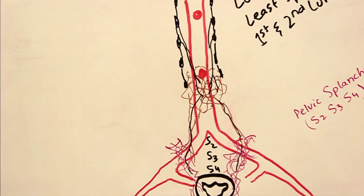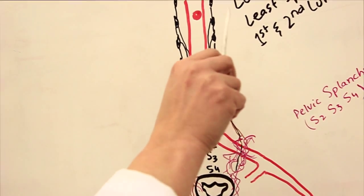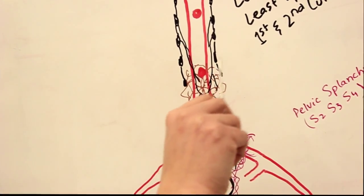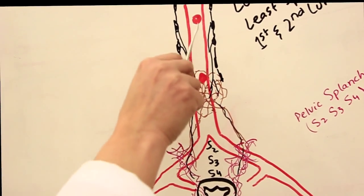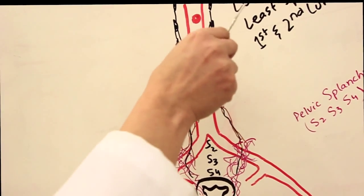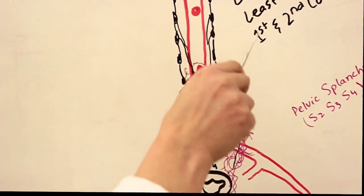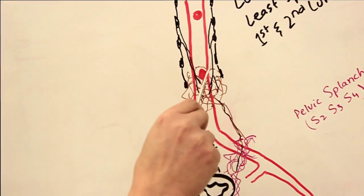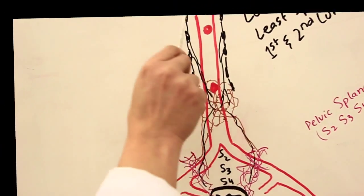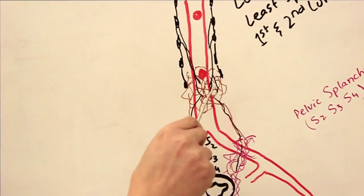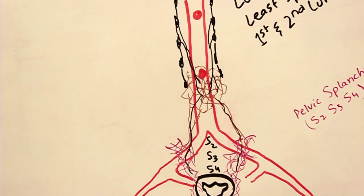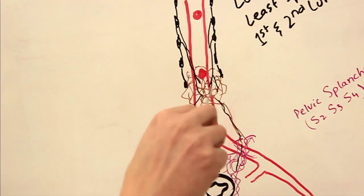When we talk about the hypogastric plexus, we are concerned with the lesser splanchnic nerve (T11) and the least splanchnic nerve (T12), and then the upper two lumbar nerves L1 and L2. So T11, T12, L1, and L2 provide postganglionic sympathetic fibers that mesh around the inferior mesenteric artery and form the superior hypogastric plexus.